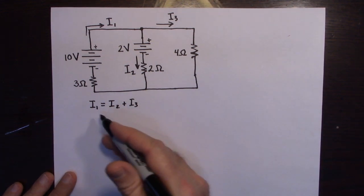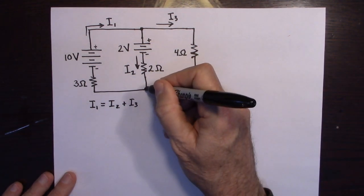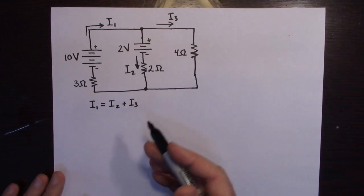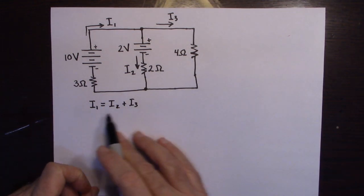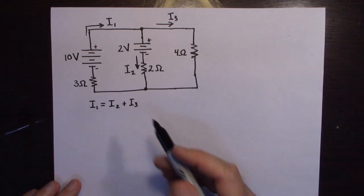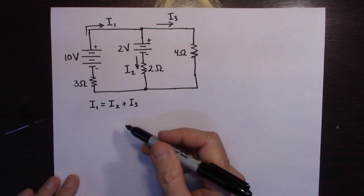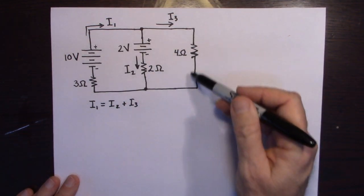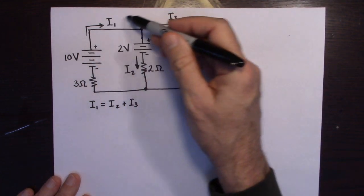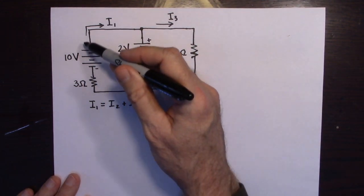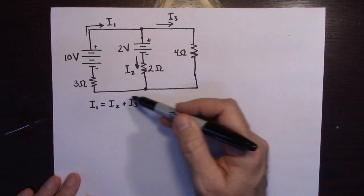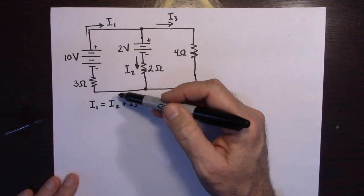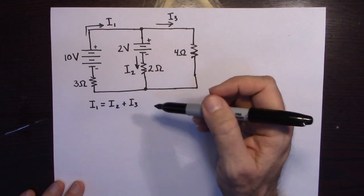I'm going to use the junction rule to get one equation. The currents in have to equal the currents out, so I1 equals I2 plus I3. That's one equation. I could try to get another equation from the other junction, but it would be the exact same equation rearranged — no new information. So I need to use a loop rule to get independent equations. I could use this loop or that loop — I'll go with this one.